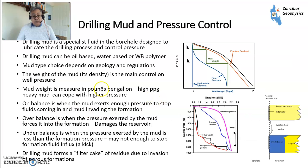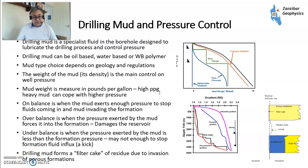To control pressure, we use drilling mud — a fluid within the borehole. Drilling mud can be oil-based, water-based, or water-based polymer. Mud choice depends on the geology and regulations; you want to use oil-based as little as possible due to HSE issues, but sometimes geological safety overrides that. The weight of the mud (its density, normally measured in pounds per gallon) is the main control on well pressure. High PPG mud can cope with higher pressure, but if the mud weight is too heavy you'll get invasion of the formation — so you need to stay in balance.